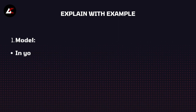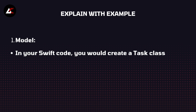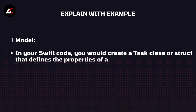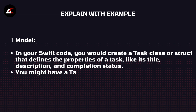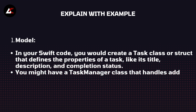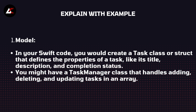I will explain the example one by one. First is the Model. In your Swift code you would create a Task class or struct that defines the properties of the task like title, description, and completion status. You might also have a TaskManager class that handles adding, deleting, and updating tasks in an array.